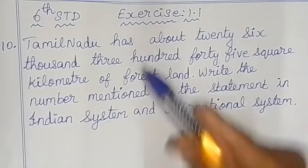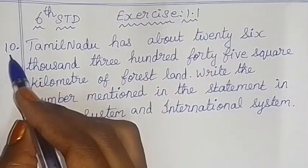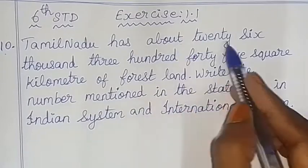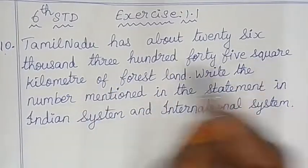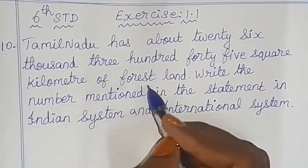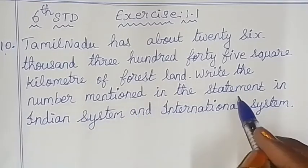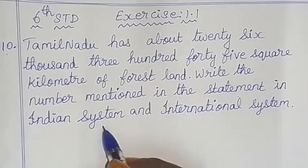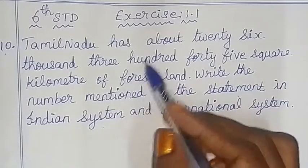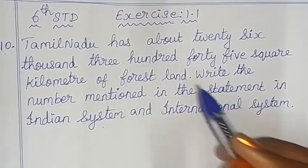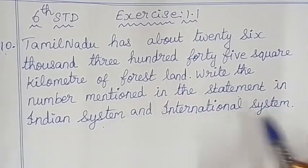Hello children. In exercise 1.1, sum number 10: Tamil Nadu has about 26,345 km² of forest land. Write the number mentioned in the statement in the Indian system and international system.